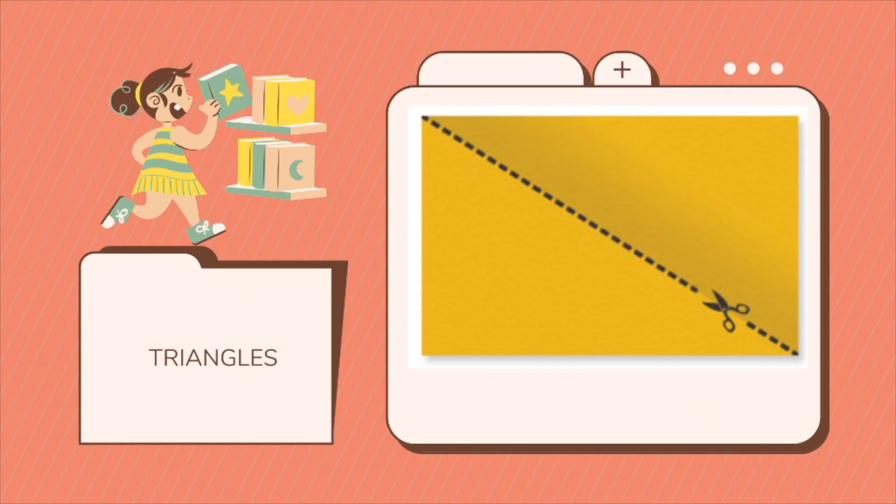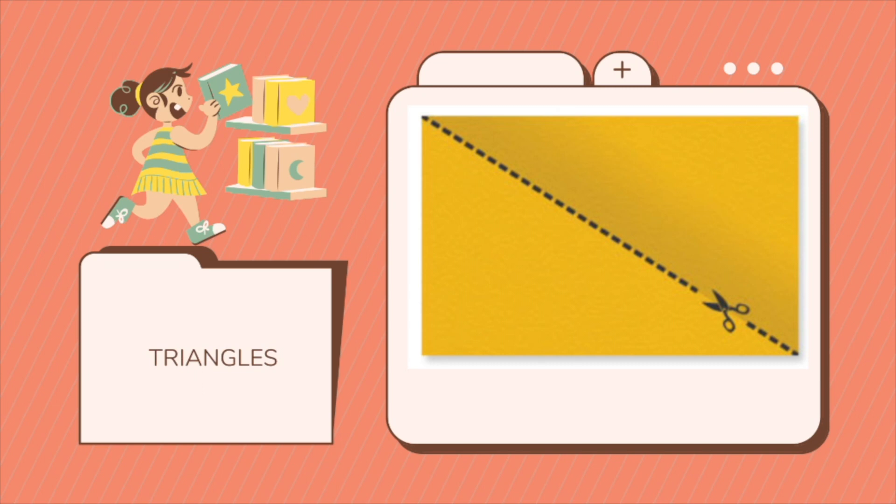Have you ever noticed that in a rectangle, it can be divided into two congruent triangles? We have here triangle 1 and triangle 2 if you cut it diagonally. Doing this decomposes the rectangle into two triangles.